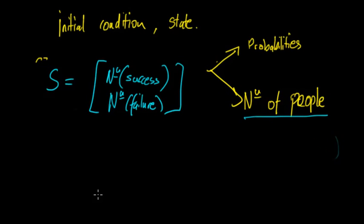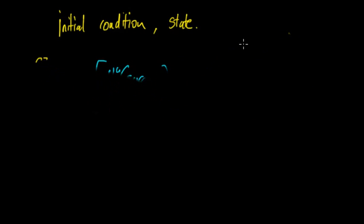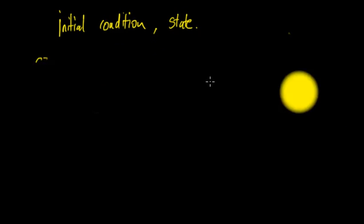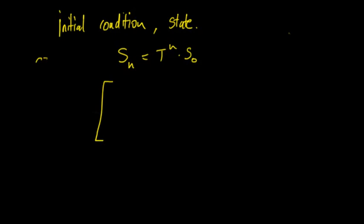Then, how does the transition matrix actually work? The general formula is that S is equal to T to the N multiplied by S zero, where S zero is the initial condition. What this basically says is the probability of success and failure at trial N.